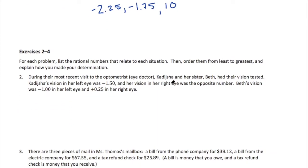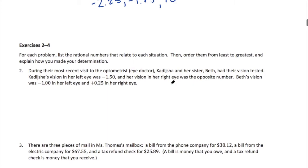We're going to do the same thing in the next example. During their most recent visit to the optometrist — the eye doctor — Kadisha and her sister Beth had their vision tested. Kadisha's vision in her left eye was negative 1.5, and her vision in her right eye was the opposite number. Beth's vision was negative 1 in one eye and positive 0.25 in her left eye. Let's go ahead and put those numbers in order.